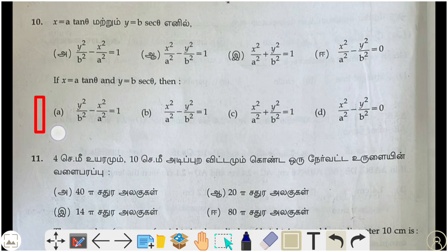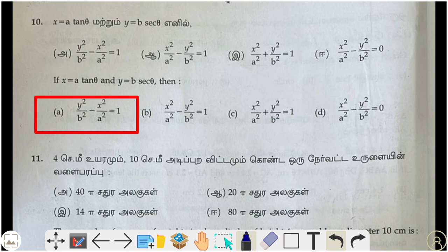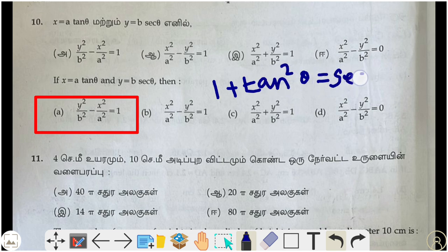Tenth question: option A — y²/b² − x²/a² = 1. We use the identity 1 + tan²θ = sec²θ. Substituting x = a·tanθ and y = b·secθ directly gives y²/b² − x²/a² = 1 as the correct answer.